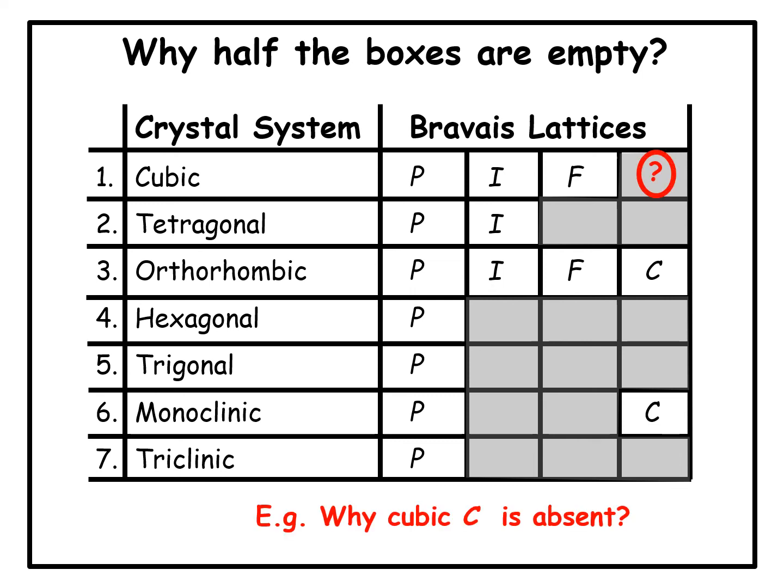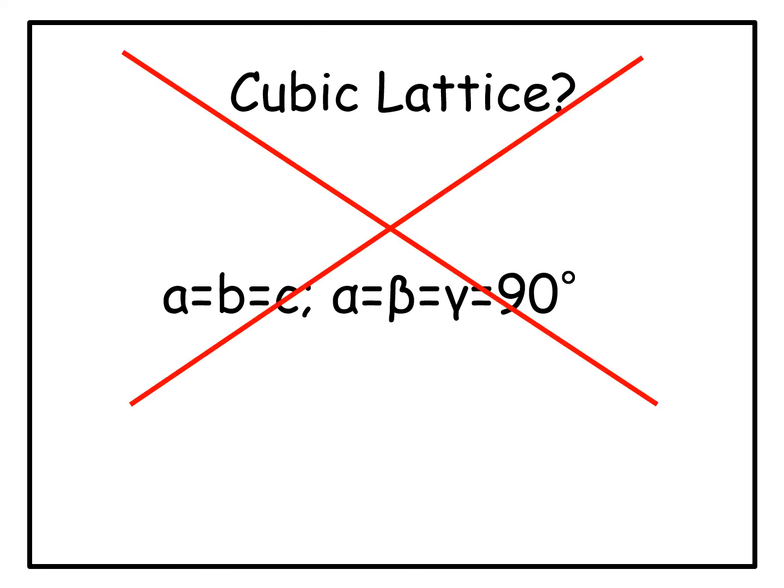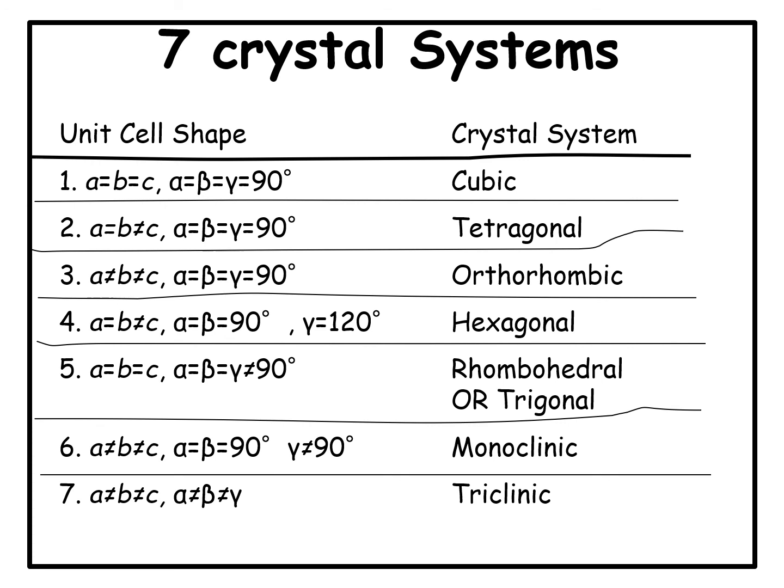We will look at the answer to this question in subsequent videos. When we do, we will find an interesting result: the cubic lattice as defined by the lattice parameter relationship a equals b equals c, alpha equals beta equals gamma equals 90 degrees, is not really a proper definition of a cubic lattice. It is a description of the cubic lattice but not the essential requirement. In that sense, all the lattice parameter relationships in this table are descriptions of the corresponding crystal systems, not definitions.